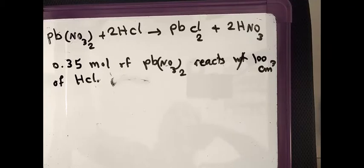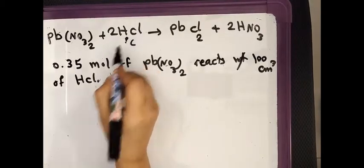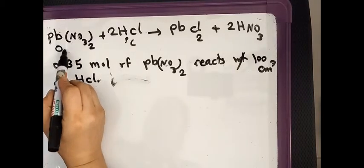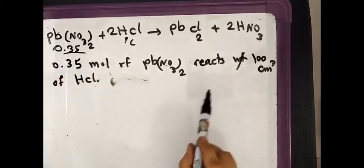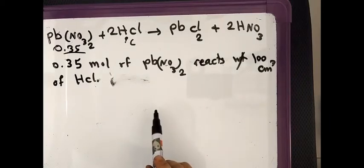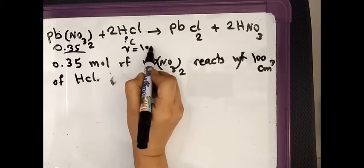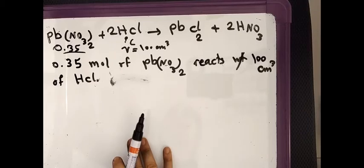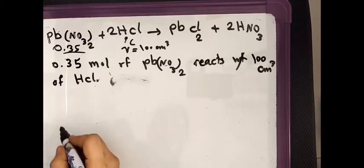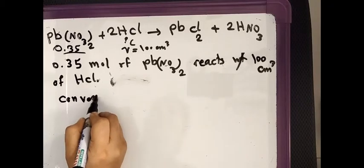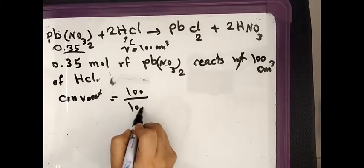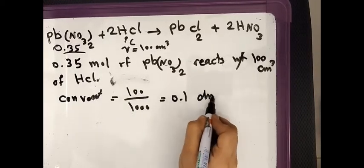We need to find the concentration of the acid. What is given to us is the number of moles of Pb(NO₃)₂, which is 0.35 moles, and also the volume of the acid, which is 100 cm³. First, check the units — 100 cm³ is not standard, so we convert: 100 divided by 1000 equals 0.1 dm³.